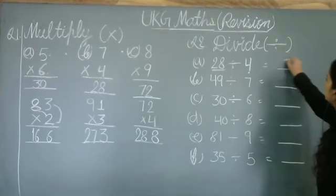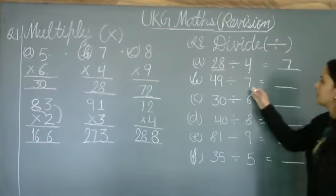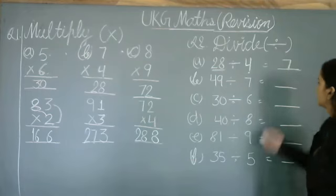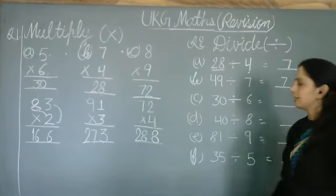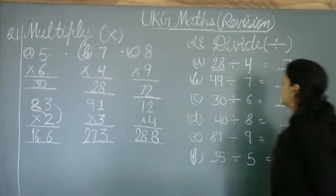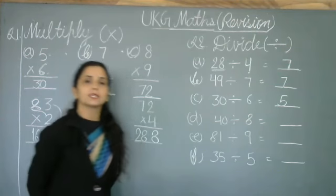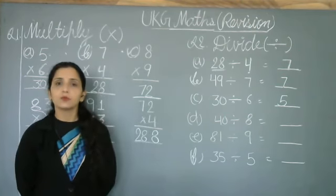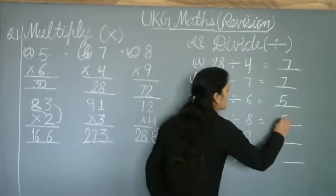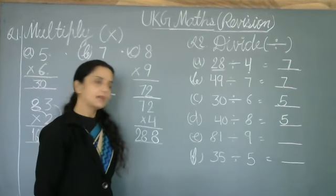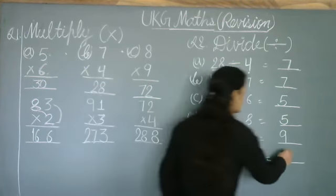28 divided by 4 is 7. So answer is 7. See, 30 divided by 6. 6 times 5 is 30, so answer is 5. See, 40 divided by 8. 8 table: 8 ones are 8, twos are 16, threes are 24, fours are 32, fives are 40. Answer is 5. Nine times nine is 81, so answer is 9. Five times seven is 35, so answer is 7.